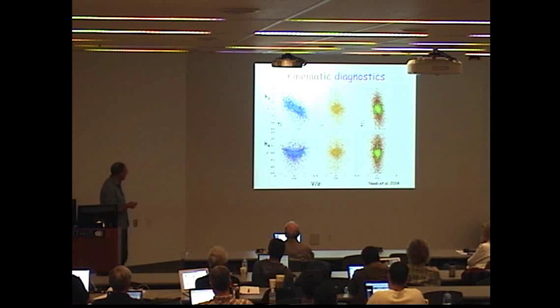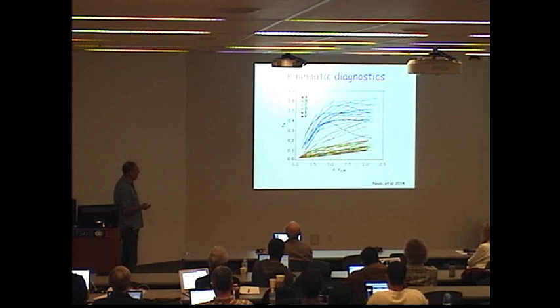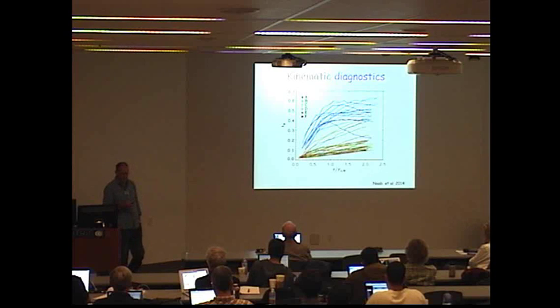You can see, for example, classes C, E, and F are pretty hard to discriminate in this kind of h3 versus v over sigma, but you can discriminate them quite well against the A and B class. There's two other diagnostics that they had.